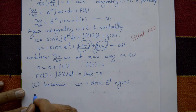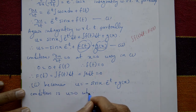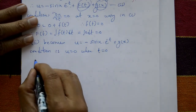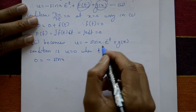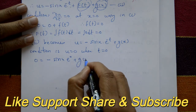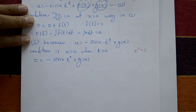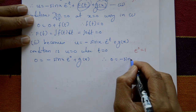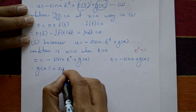Using the second condition: u = 0 when t = 0. Substituting: 0 = −sin(x)·e^0 + g(x) = −sin(x)·1 + g(x). Therefore 0 = −sin(x) + g(x), which gives g(x) = sin(x).